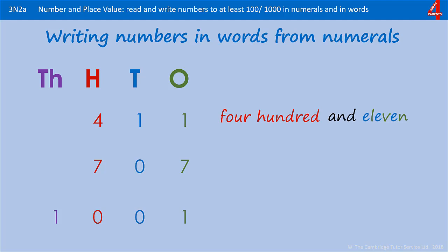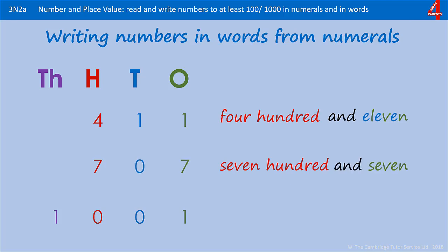Sometimes having a zero in one of the place values can throw a little bit of confusion. What you have here is seven hundred, but there are no tens and just a seven in the ones, so that would just be seven hundred and seven.